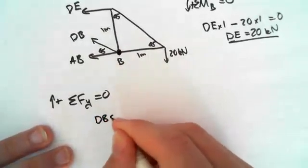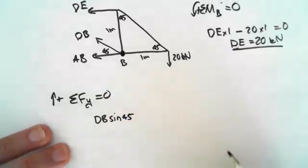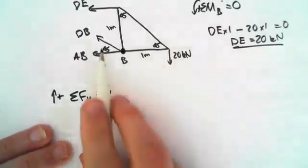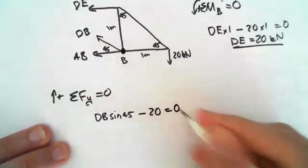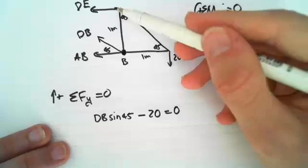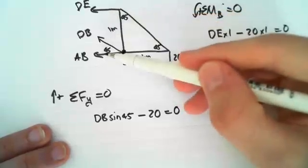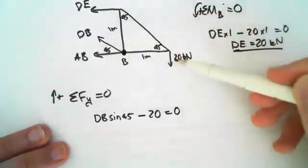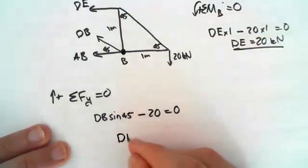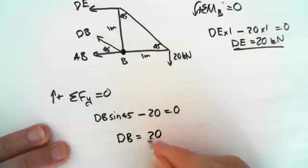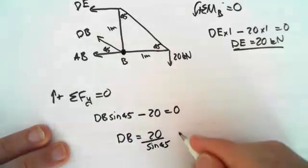DB sin 45. So this is taking the Y component of DB, and it's going up minus 20 equals zero, since these don't act in the Y direction, these two, and it's only DB and this 20 external force here. So DB equals 20 on sin 45 kilonewtons.